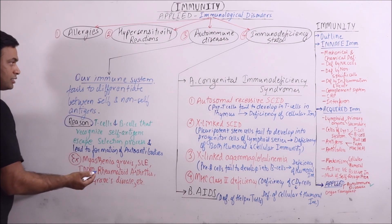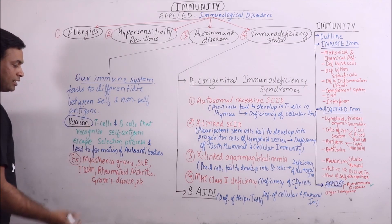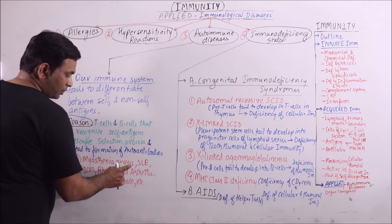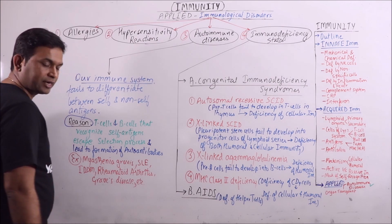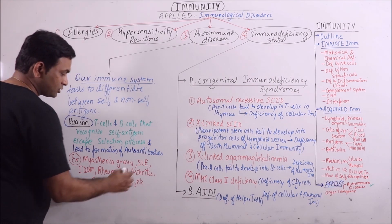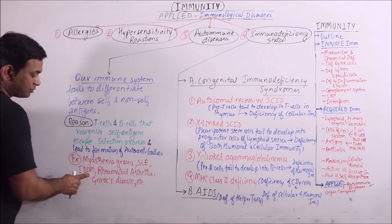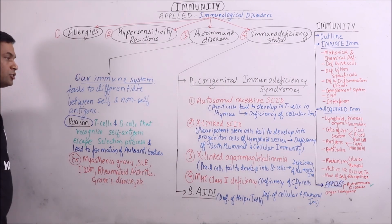For example, the disease in which the immune system works against our own cells or tissues are myasthenia gravis, in which the antibodies are formed against the cholinergic receptors. SLE, IDDM that is insulin dependent diabetes mellitus, rheumatoid arthritis, Graves' disease, psoriasis, etc.